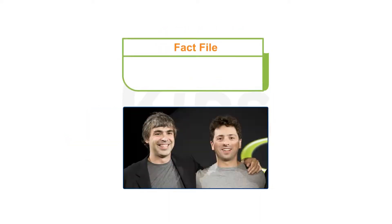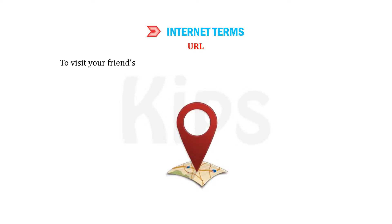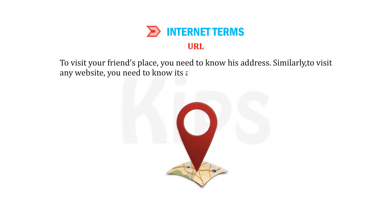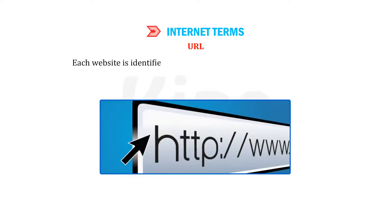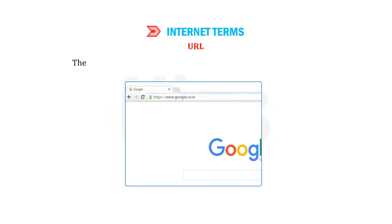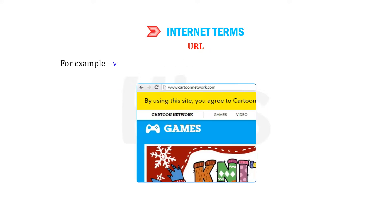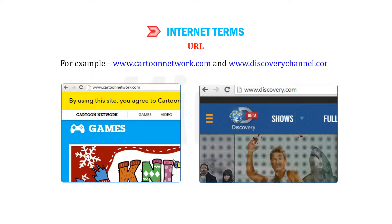Who are they? They are Larry Page and Sergey Brin, the founders of Google, the world's most popular search engine. URL: Just as you need to know your friend's address to visit their place, you need to know a website's address to visit it. Each website is identified by its unique address, which is known as the Uniform Resource Locator, or URL. The URL should be entered in the address bar of a web browser. For example, www.cartoonnetwork.com and www.discoverychannel.com are the URLs of Cartoon Network and Discovery Channel respectively.